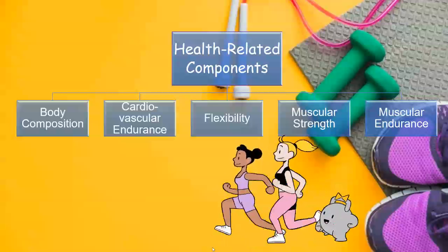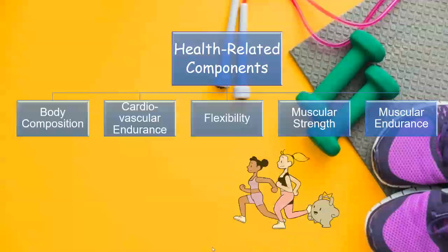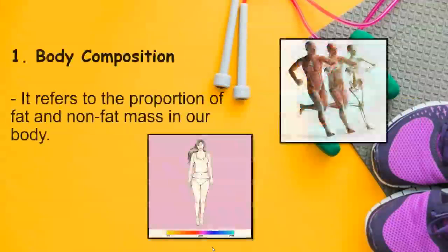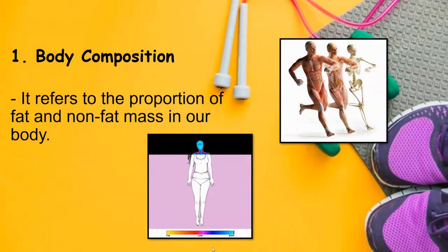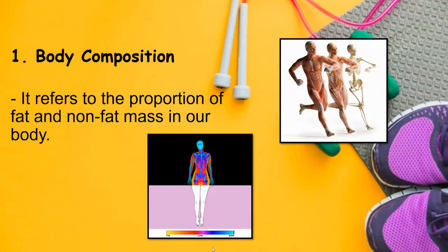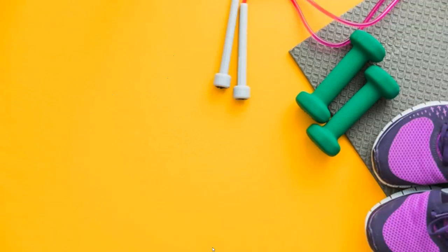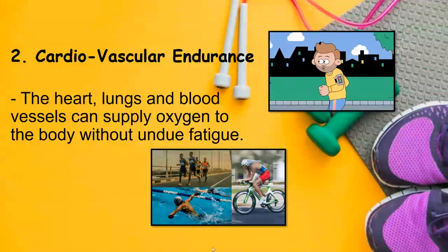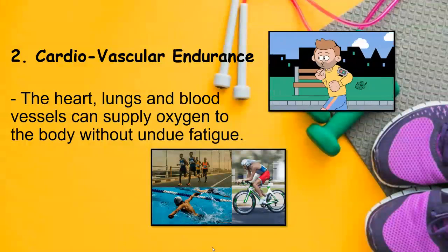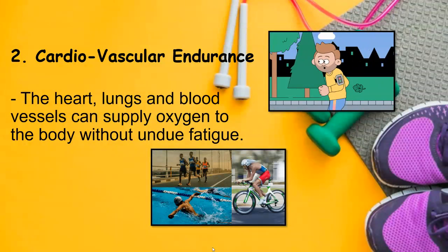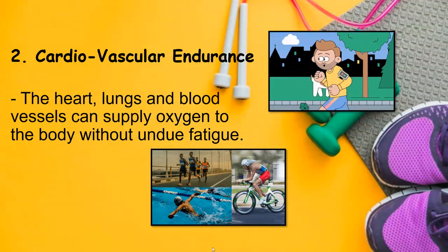Let's discuss them one by one. Body composition describes what part of total body weight is fat and what part is fat-free. The second one is cardiovascular endurance — it is the body's ability to take in, transport, and convert oxygen to energy during exercise.